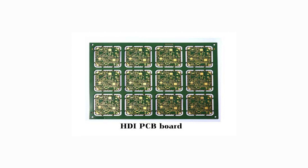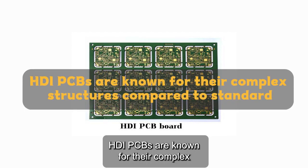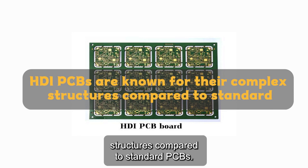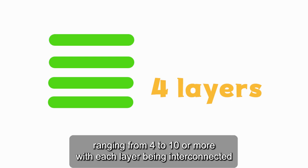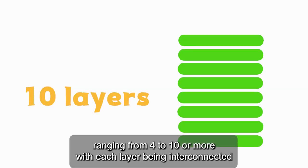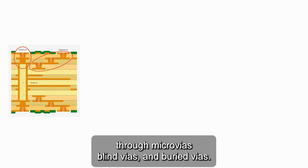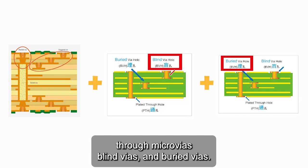Complex Structures. HDI PCBs are known for their complex structures compared to standard PCBs. They incorporate multiple layers, ranging from 4 to 10 or more, with each layer being interconnected through microvias, blind vias, and buried vias.